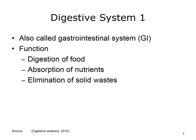The digestive system is also called the gastrointestinal system, or GI system. Its main functions deal with the digestion of food, the absorption of nutrients, and the elimination of solid wastes. Solid wastes are primarily made up of undigested materials.